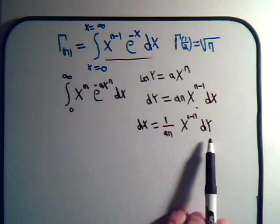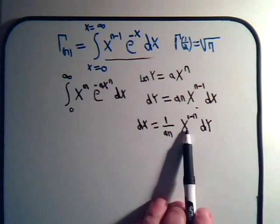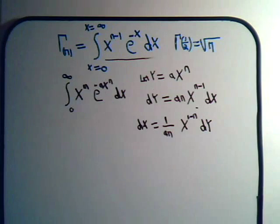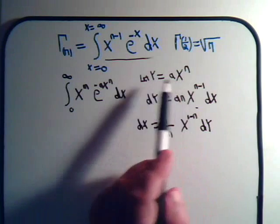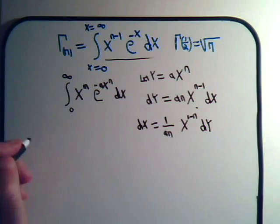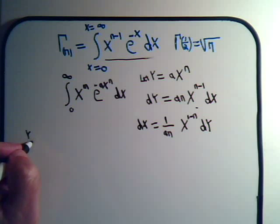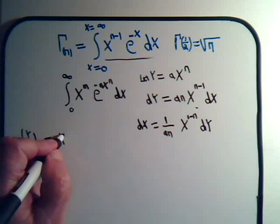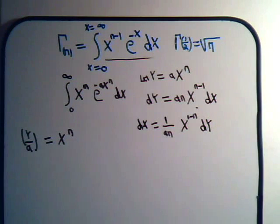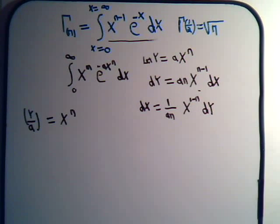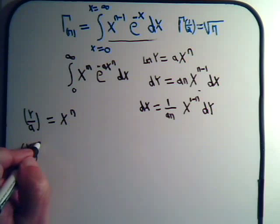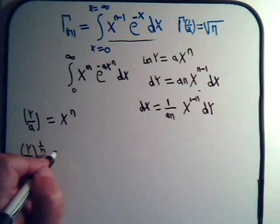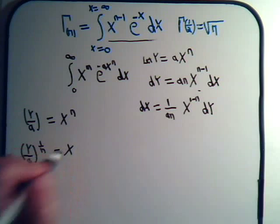But this has to be expressed now, not in terms of the variable x, but in terms of our new variable y. So we go back and look at our substitution, y over a, that equals x to the n power. So if we raise both sides to the 1 over n, that would equal x.